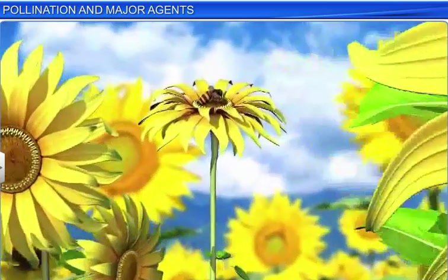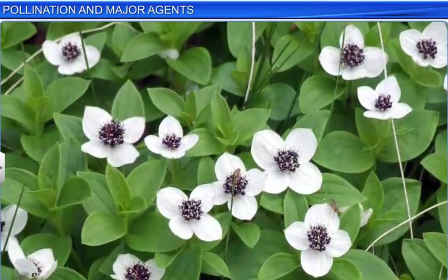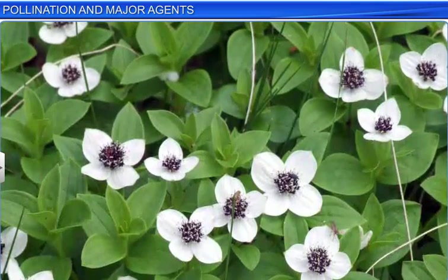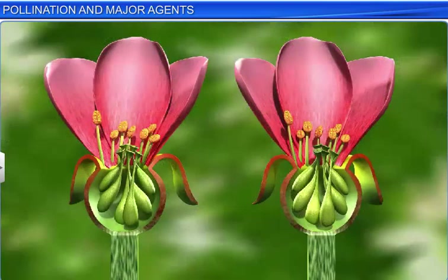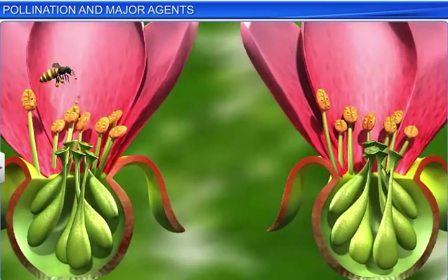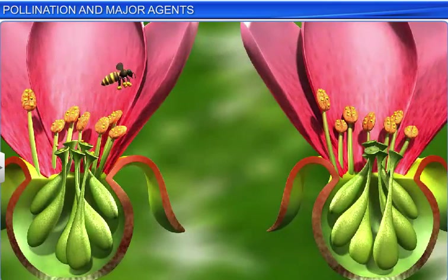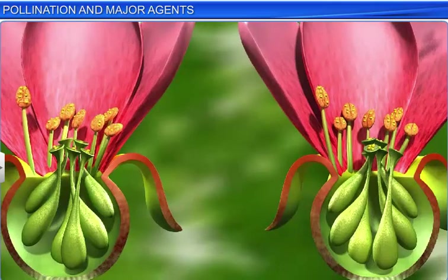Moreover, these flowers produce pollen grains as well as large quantities of nectar to reward the agents. When a pollinating agent comes in contact with the anther and nectar, its body gets covered in a coat of sticky pollen grains. When the agent sits on another flower to suck the nectar, the pollen present on their bodies comes into contact with the stigma, thus completing the process of pollination.